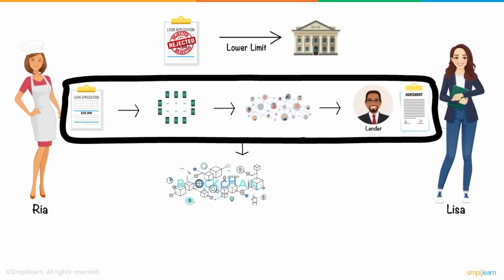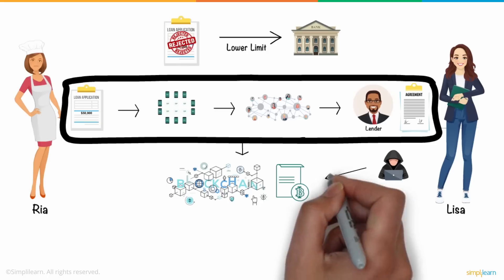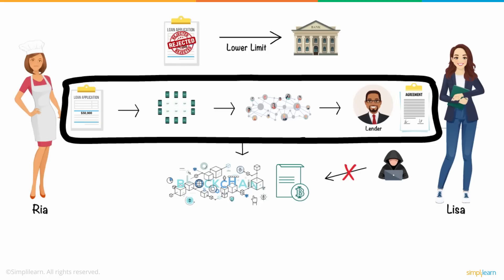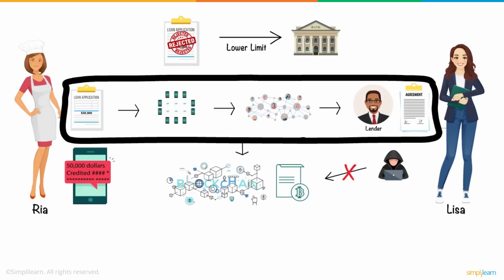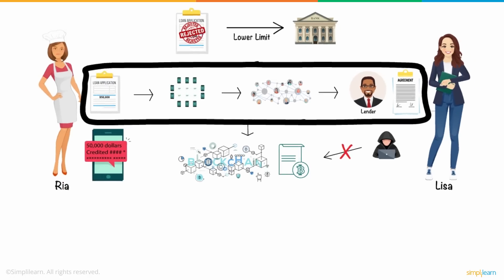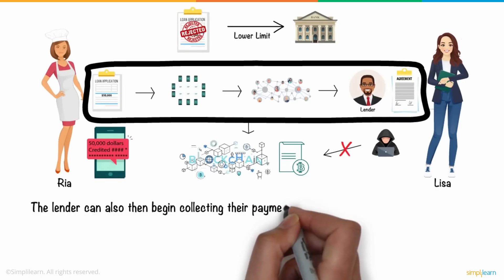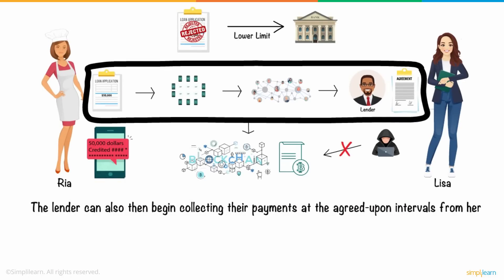The transaction is then recorded in the blockchain, where it will be securely stored in a ledger that will make it impossible to hack, or any kind of malicious intervention. And after that, she'll receive her required amount of money once it is verified by the consensus mechanism. The lender can also then begin collecting their payments at the agreed-upon intervals from her.